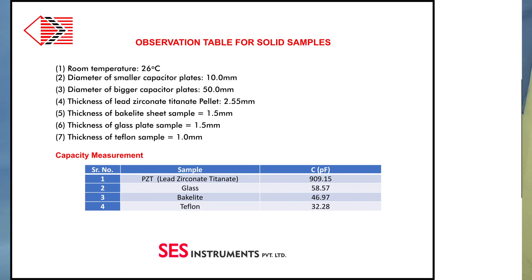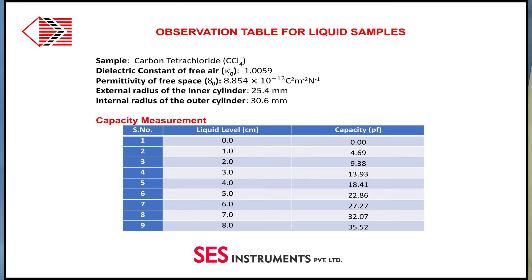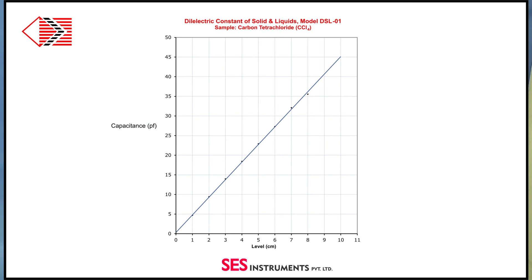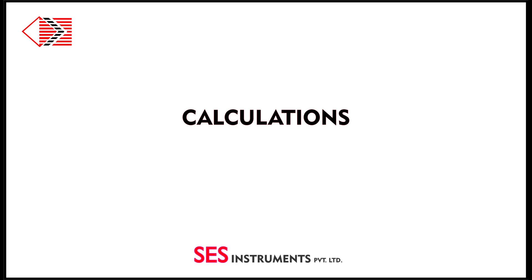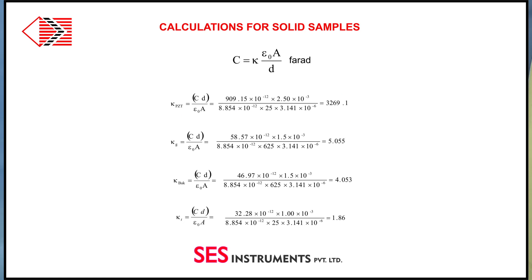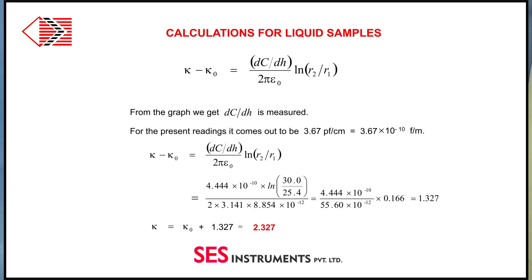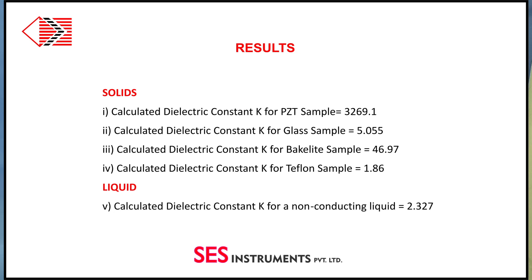The observations of solid and liquid samples should be recorded accordingly. A graph of the liquid sample readings should be drawn and its slope value calculated, which will be used in our calculations. Applying the relevant formula for solids, we get the dielectric constant values for different samples. Similarly, for liquid samples, we get the value of the dielectric constant. These values depend on different parameters such as composition, area, and thickness.